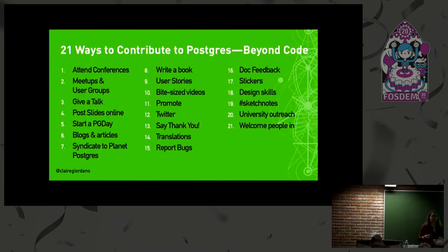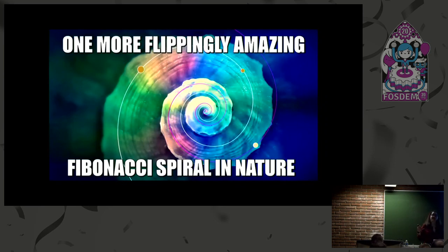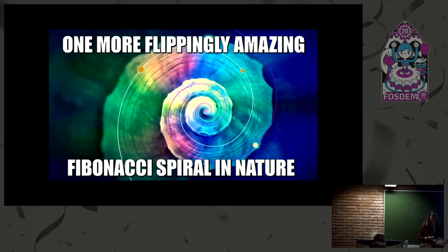That's the summary of 21 ways to contribute to Postgres beyond code. I hope I've given you some good ideas of things you can do if you're just getting started with Postgres, ways to share your lessons learned, pain points, and expertise. And I also hope I've given you some appreciation for the other types of skills we need to keep growing this community and raising awareness of how awesome Postgres is. And I had to put up one more Fibonacci spiral — a snail shell with two Fibonacci spirals — in pink and white. Thank you very much.